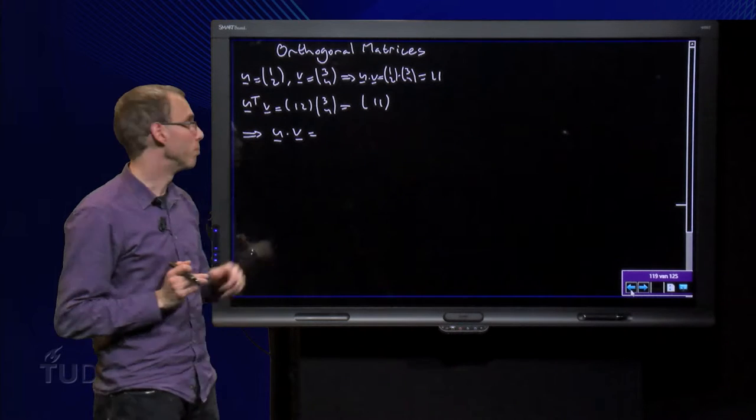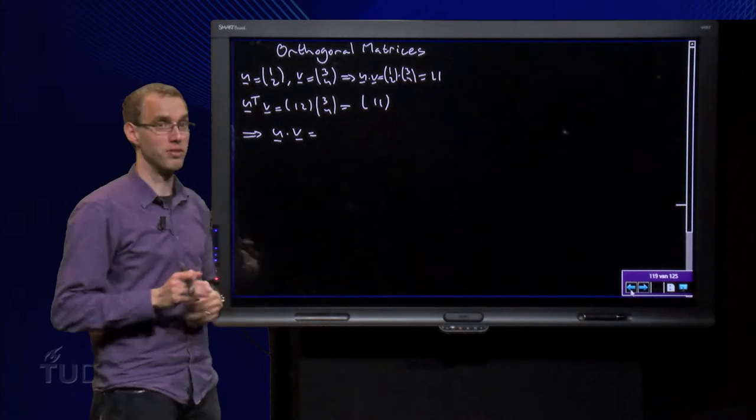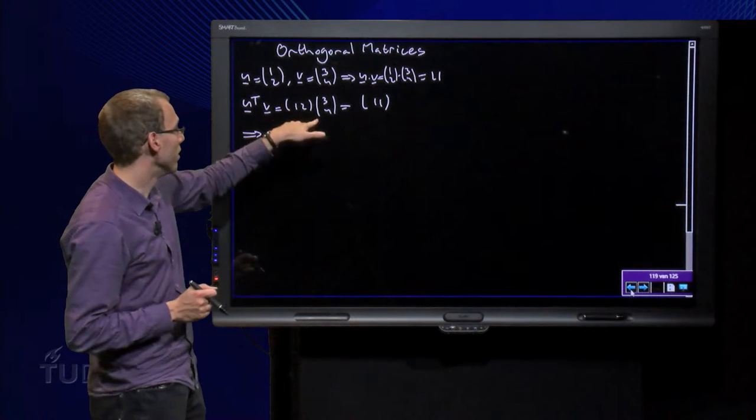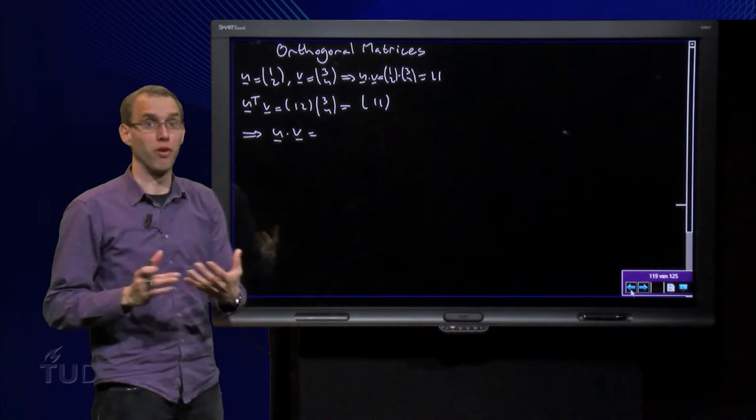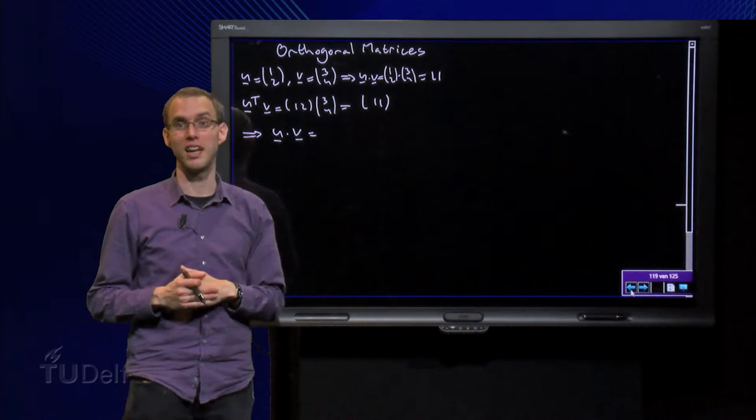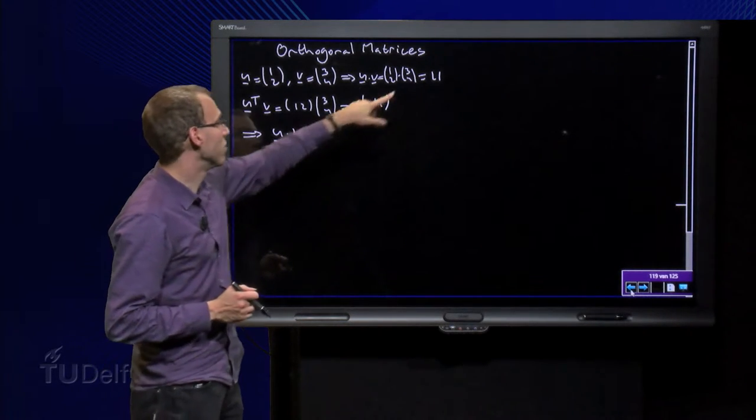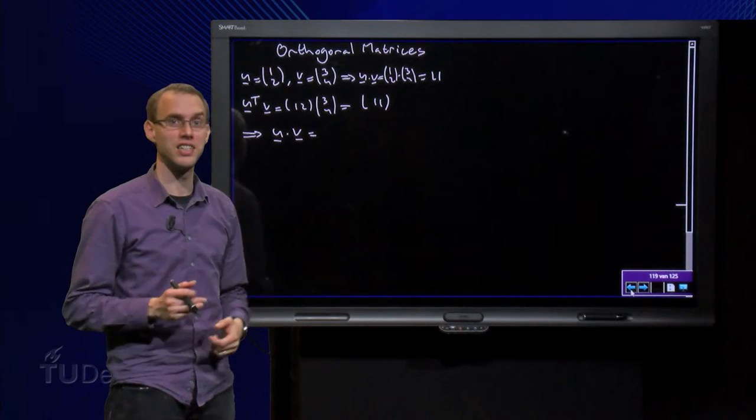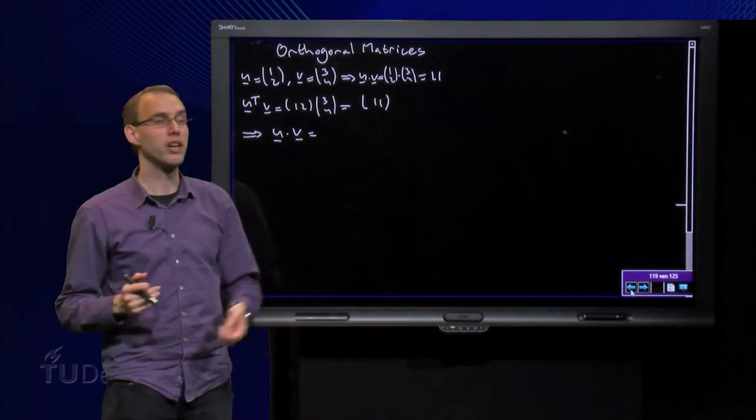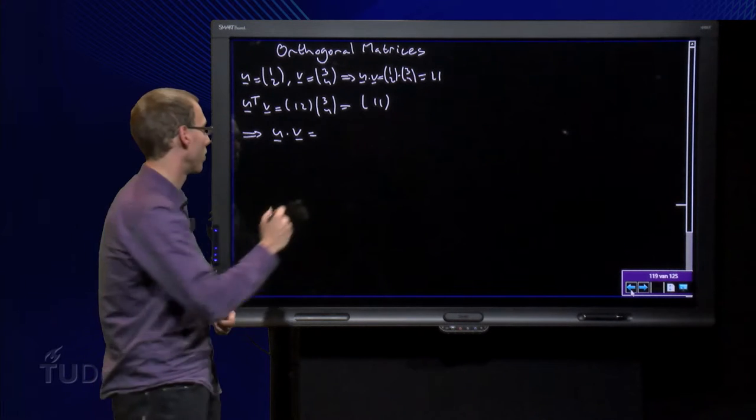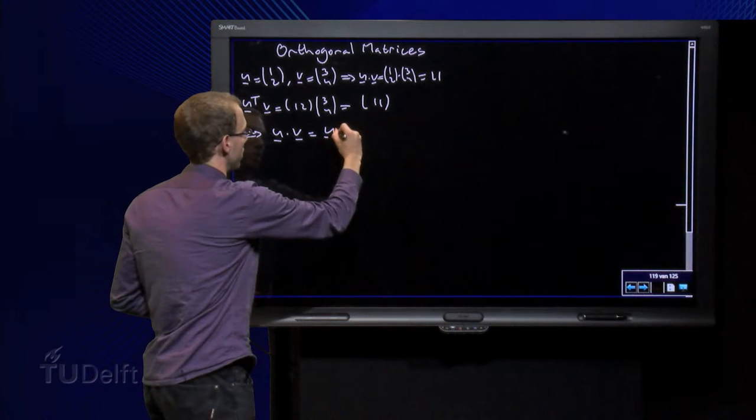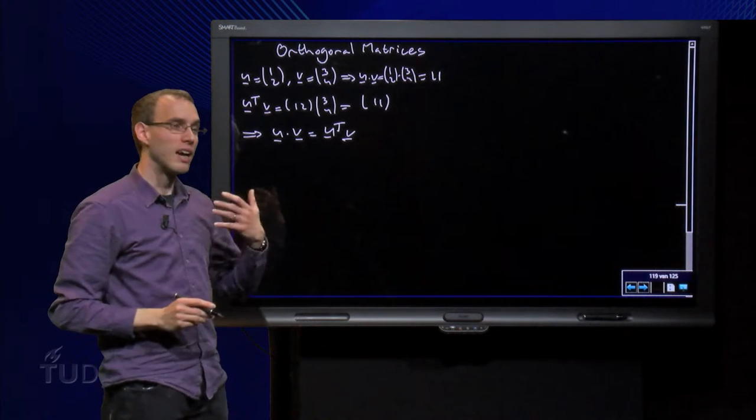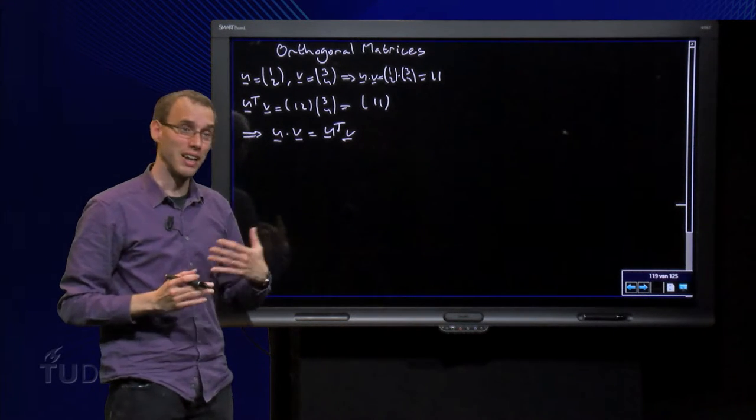I can also compute u transpose times v as a matrix product, so I put the transpose of u here, v over there, then we get a small matrix, 1 by 1 matrix with the element 11. And we actually consider those the same. You are doing basically the same computation. So you can view an inner product as a matrix product, u transpose times v. And that will be useful later on, as we will see.